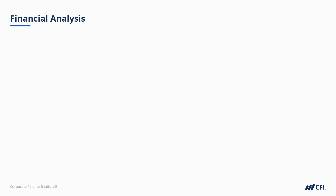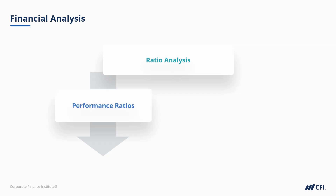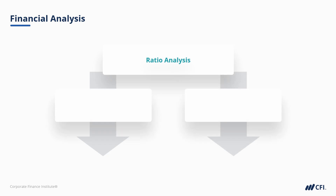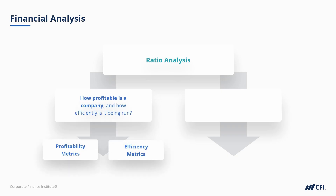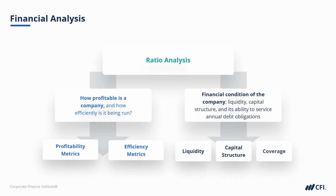Financial analysis is where we really start to get quantitative in the credit assessment process. This part is often called ratio analysis. Broadly speaking, there are performance ratios and there are financial ratios. Performance ratios seek to help an analyst understand how profitable a company is and how efficiently it's being run. Financial ratios seek to help us understand the company's liquidity, its capital structure, and its ability to service its annual debt obligations.